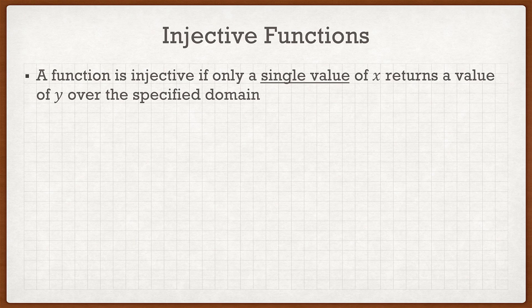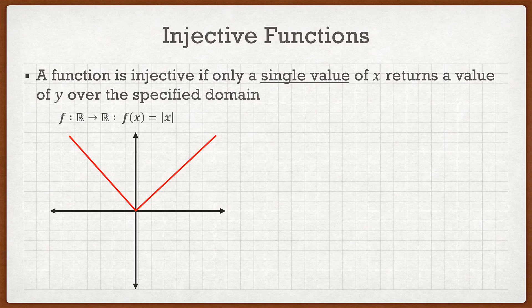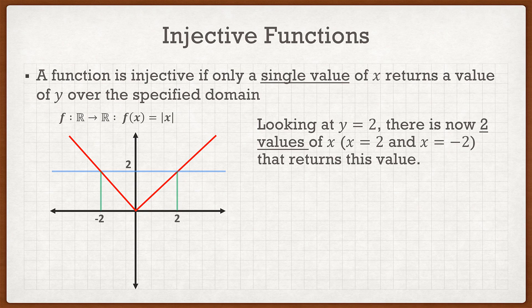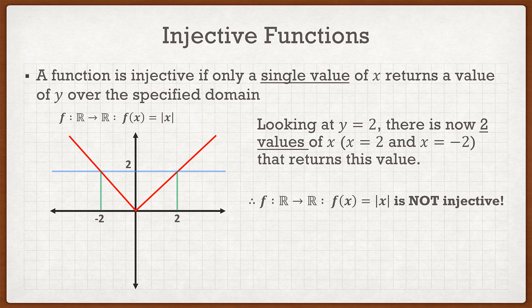However, if we look at y = |x|, which maps the negative region back into the positive region, and we look at y = 2, we see there are actually two values of x that return the same value of y. Because of this, the function is not injective. The trick for injective functions is to plot them and draw a horizontal line — if you get two intersections, the function is not injective.